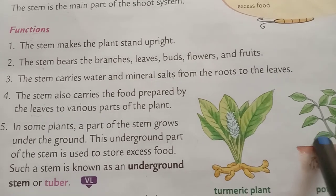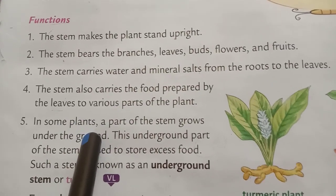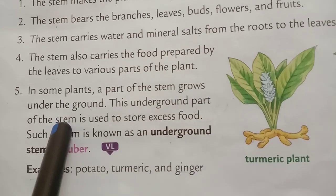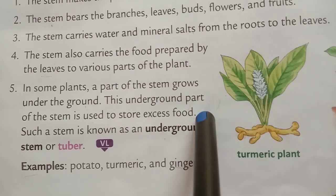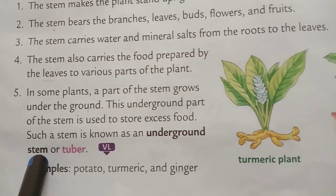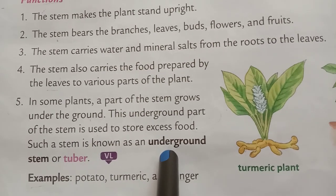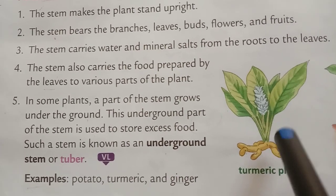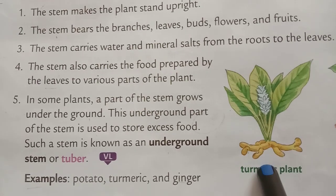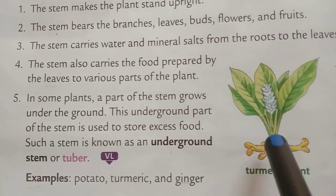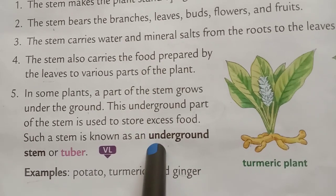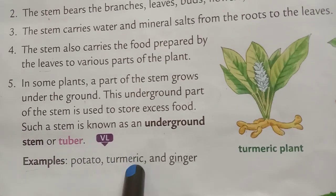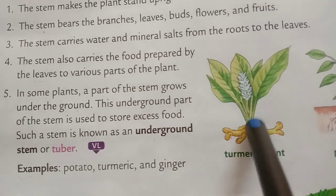In some plants, a part of the stem grows under the ground. This underground part of the stem is used to store excess food. Such a stem is known as an underground stem or tuber. Examples include potato, turmeric and ginger. You can see the picture of the turmeric plant.